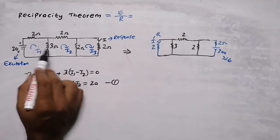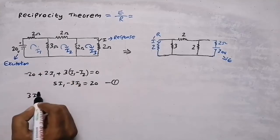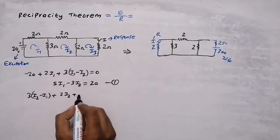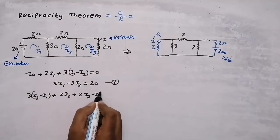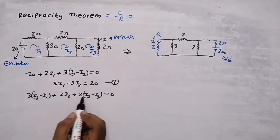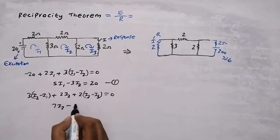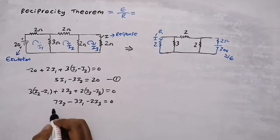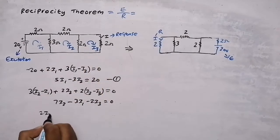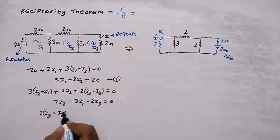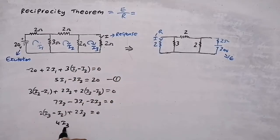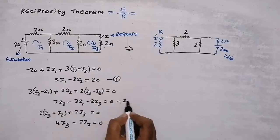Second mesh equation: 3(i2 − i1) + 2(i2 − i3) = 0, giving 7i2 − 3i1 − 2i3 = 0. For the third mesh: 2(i3 − i2) + 2i3 = 0, giving 4i3 − 2i2 = 0. That is my third equation.